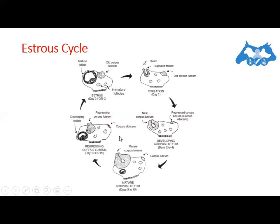Above day 15, around days 16 to 19, increased follicular growth accompanied by estrogen secretion by the ovary stimulates PGF2-alpha secretion by the uterus, causing rapid regression of the corpus luteum. By day 19, the corpus luteum is almost non-functional and progesterone release is suppressed, removing the blocking action of progesterone on LH and FSH.